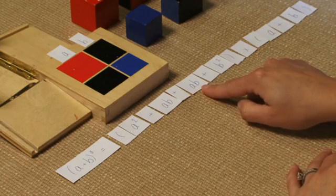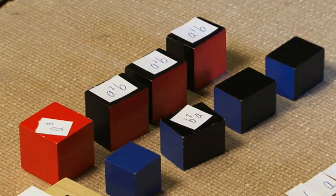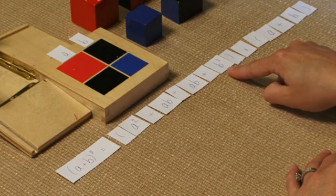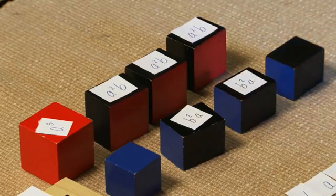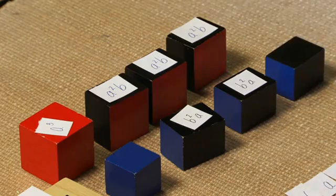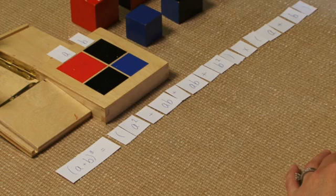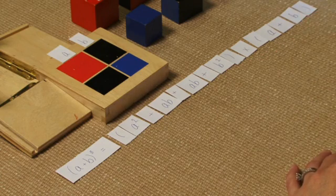Again, we have AB times A or A squared B. Here we have B squared A or B squared A. And then last we have our B cubed.